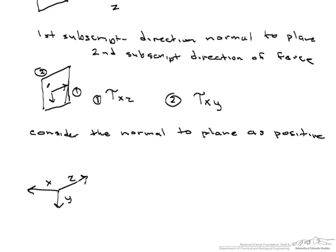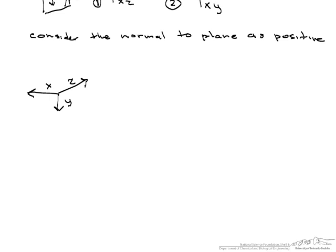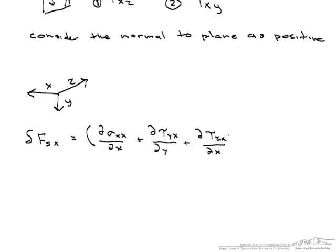Now we can look at a differential element using the different forces and using a Taylor series expansion. And what we get in differential form is the surface forces. So this is our normal force, this is one of our tangential forces, this is the second tangential force, and this is all multiplied by the volume of our differential element.